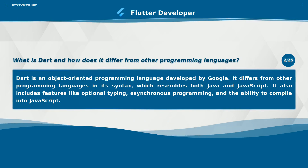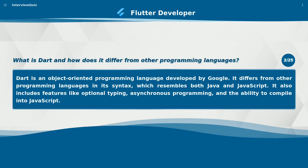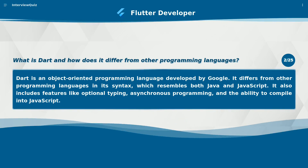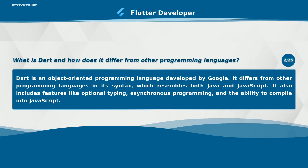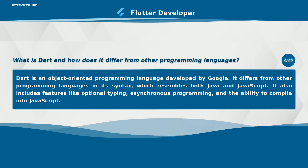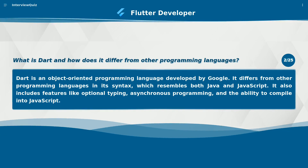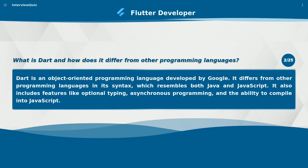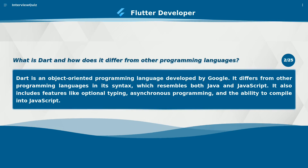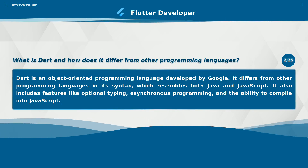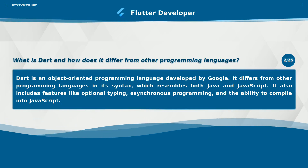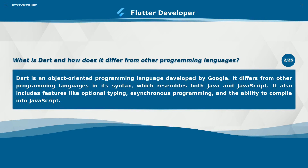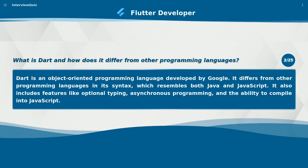What is Dart and how does it differ from other programming languages? Dart is an object-oriented programming language developed by Google. It differs from other programming languages in its syntax, which resembles both Java and JavaScript. It also includes features like optional typing, asynchronous programming, and the ability to compile into JavaScript.